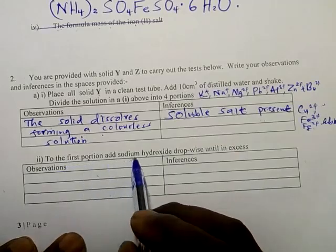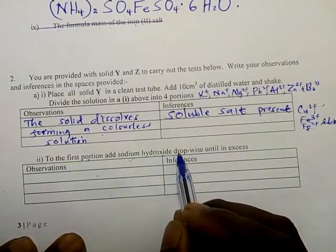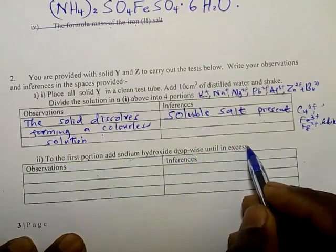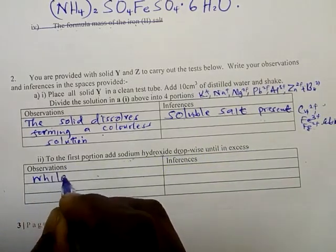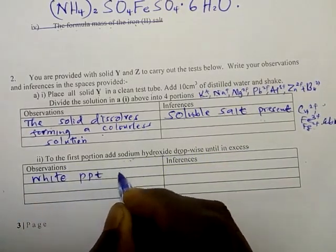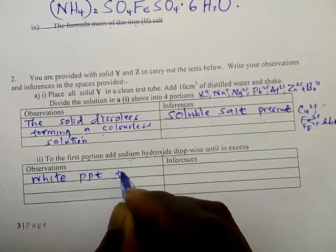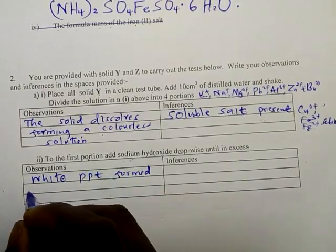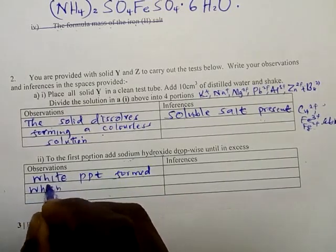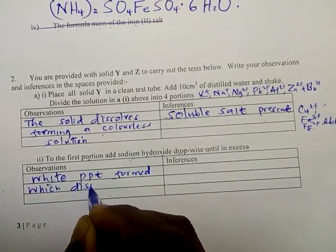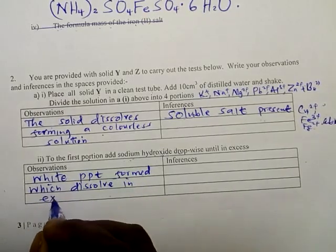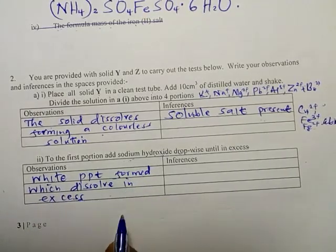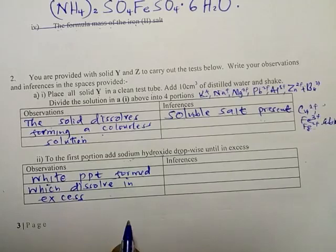To the first portion, add sodium hydroxide dropwise until in excess. Observation: white precipitate is formed, which dissolves in excess. A white precipitate is formed which dissolves in excess.